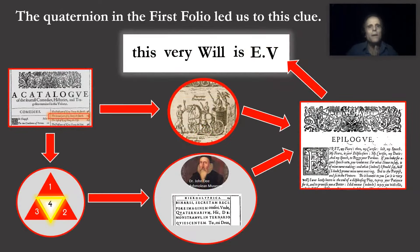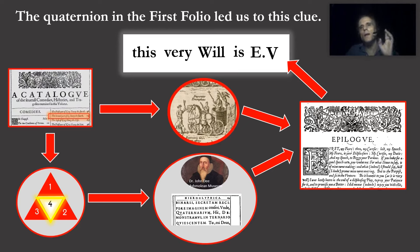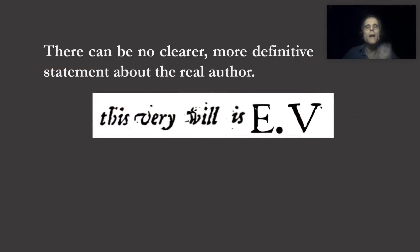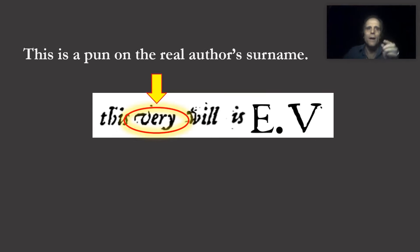The quaternion in the first folio has led us to this clue. There can be no doubt it is about the authorship of the play, since the message is grammatically correct and makes sense. The location of the quaternion imitates the place a Roman emperor would have in a triumphal procession, which means it is as important to the folio as the emperor is to Rome. That, in turn, leads to Theorem 20 in Dee's Monas Hieroglyphica via the wrong page number for Henry V. Those allusions lead us to the most logical place for another clue: the epilogue to the second part of Henry IV. In my opinion, there can be no clearer, more definitive statement about the real author than this. It is located within the founding document of the Shakespearean canon, and there is no more authoritative document than that. The word 'very' is also a pun on the real author's surname, as we now know, adding another link in our chain of evidence.